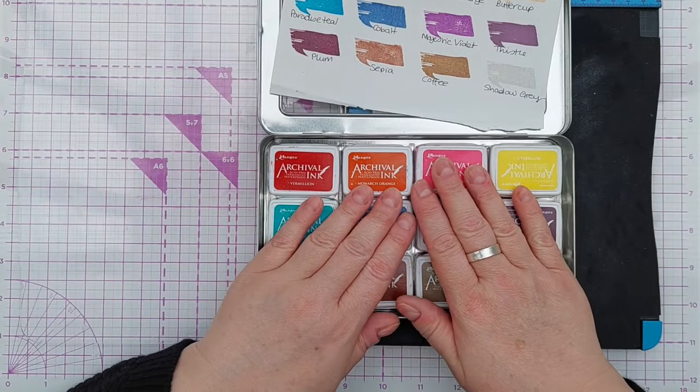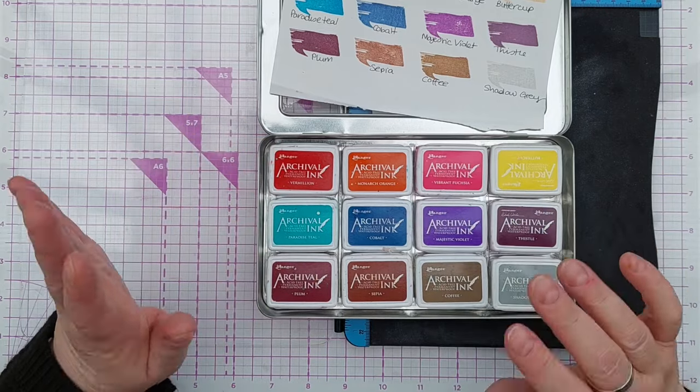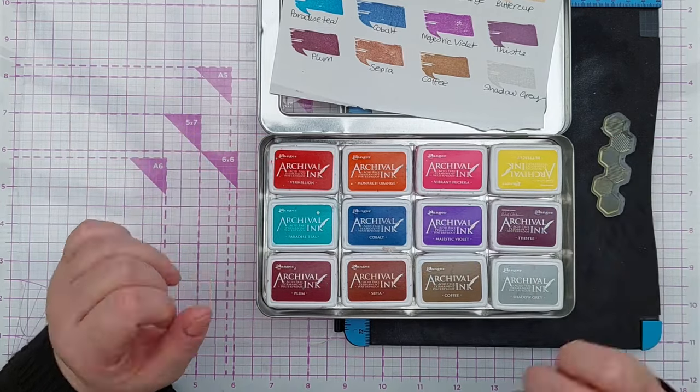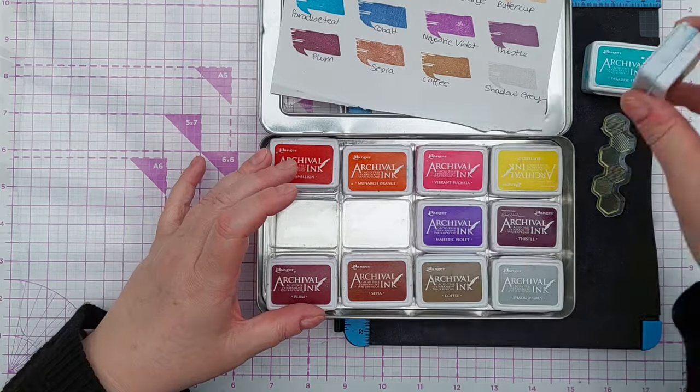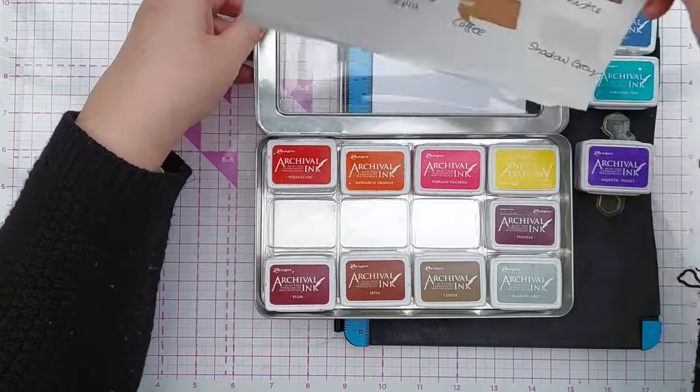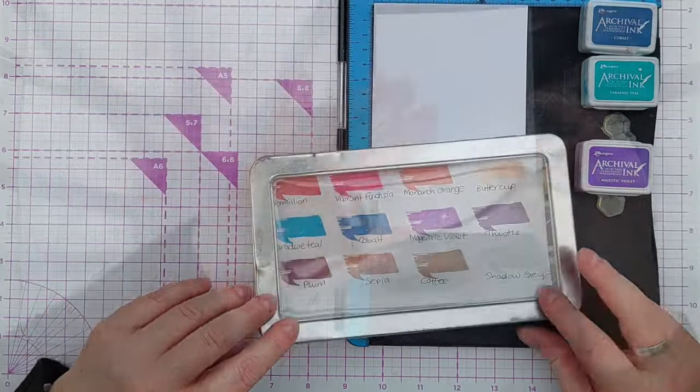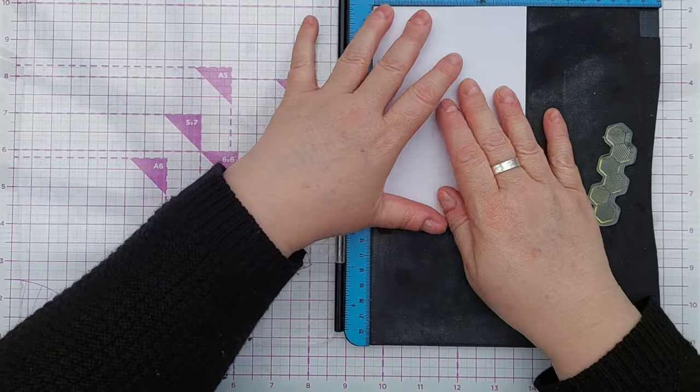For my inks today I'm going to use Ranger Archival Inks. I find these work very well with silicon stamps which this is and I think we'll go for Paradise Teal, Cobalt and maybe some Purple. Majestic Violet. And we'll have blue for the background and then purple for the pops of colour I think.